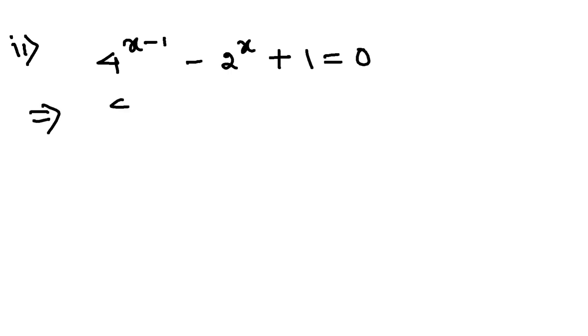Now this is 4 to the power x by 4 to the power 1, or 4, isn't it? Because a to the power m minus n is a to the power m by a to the power n. So rest will be same, minus 2 to the power x plus 1 equals 0.